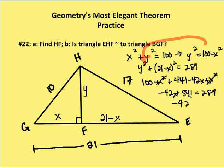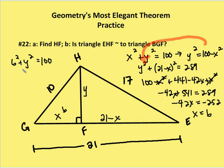Dividing both sides by negative 42 gives X equals 6. With X equal to 6, I can solve for Y: 6 squared plus Y squared equals 10 squared, so 36 plus Y squared equals 100, giving Y squared equals 64 and Y equals 8. So I have a 6, 8, 10 triangle — a 3-4-5 triple — and an 8, 15, 17 triangle.